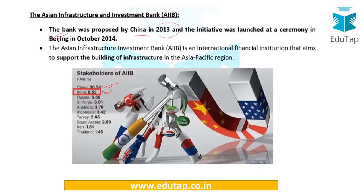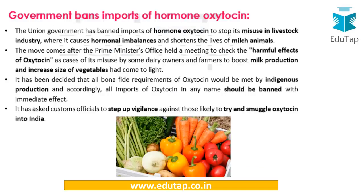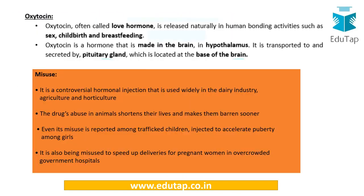The government has banned the import of the hormone Oxytocin. This hormone has harmful effects and is used in livestock for excess milk production, and even injected into vegetables to make them appear larger. Oxytocin is often called the 'love hormone' and has legitimate uses, but its misuses are widespread. It is controversially used in the dairy industry, for trafficking children, and to make animals barren. The government has come up with this ban to curb all these activities.